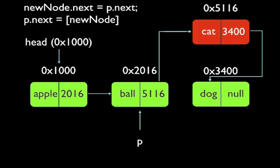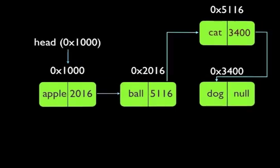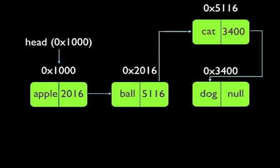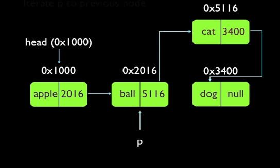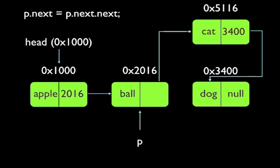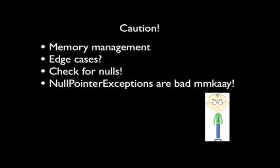Next, let's learn how to delete a node. Suppose we want to delete 'cat' from our list. First, we get a pointer to the node immediately before 'cat' — in this case, 'ball.' Next, we get 'ball' to point to 'dog' instead of 'cat.' We use the next field of 'cat' to get the memory address of 'dog,' then update ball's next field to point to that address. Now 'cat' has nothing pointing to it, and it's effectively removed.